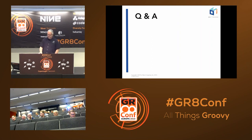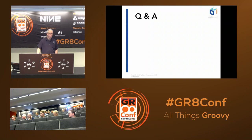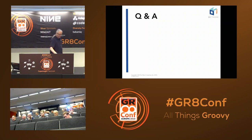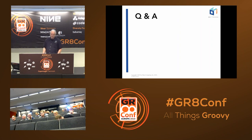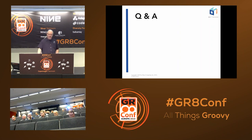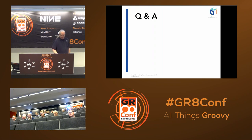Audience question: you mentioned supporting Google Cloud and Amazon — what about OpenShift? We've looked at some of the OpenShift stuff, nothing specific has been developed yet, but I wouldn't rule that out. There are other platforms that we'll be evaluating as well, but there's nothing specific around OpenShift right now — that really just means we haven't done that yet.